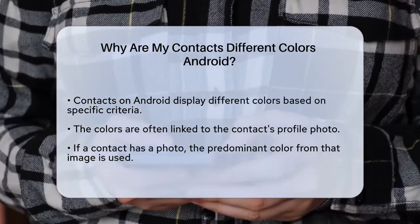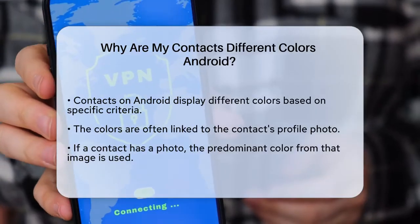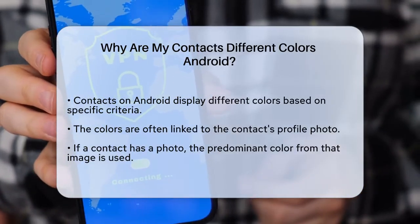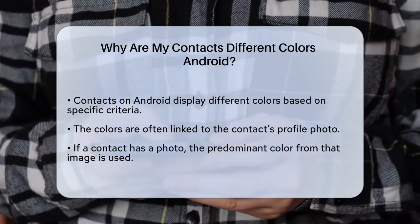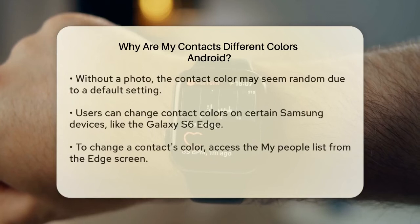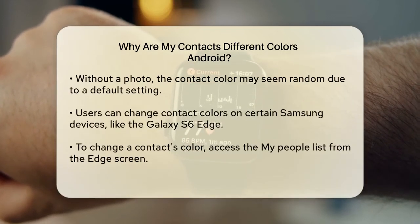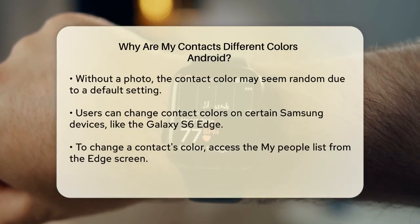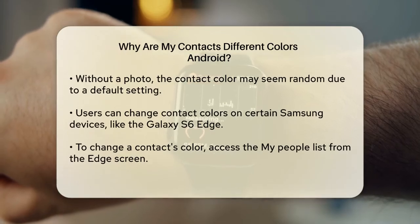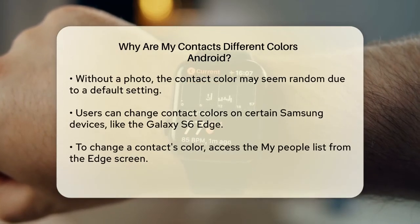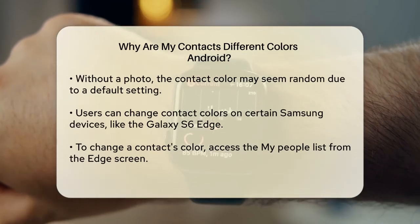The colors you see on your contacts are not random. They are usually determined by the contact's photo or the settings you've applied. On many Android devices, especially those using the Google Messenger app, the color of the contact is often pulled from the predominant color of the contact's photo. For instance, if your friend's profile picture has a lot of blue in it, their contact icon might turn blue. However, if you don't have a photo assigned to a contact, the color might appear random, because the system doesn't have a specific color to pull from, so it assigns a default color.